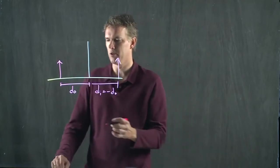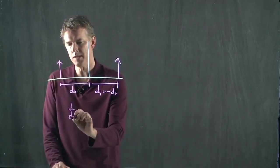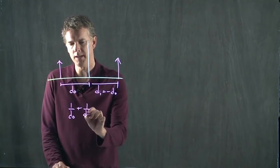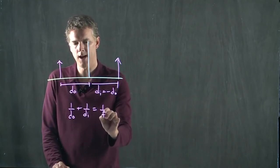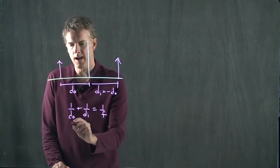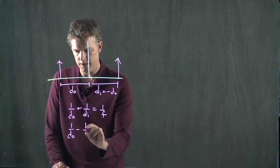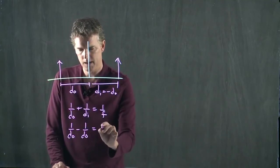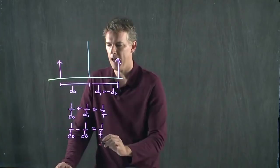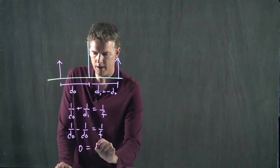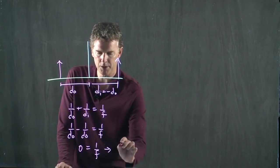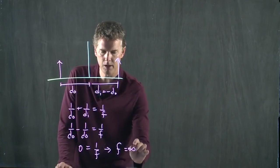And so now if you go back to your equation, we had 1 over DO plus 1 over DI equals 1 over F. 0 equals 1 over F. The only option is F is equal to infinity.